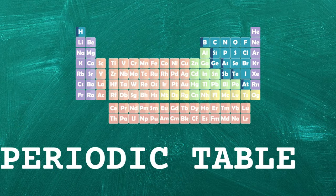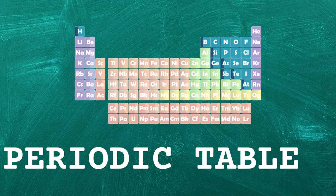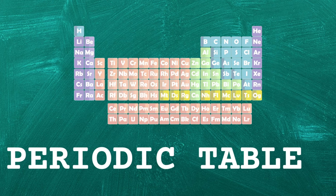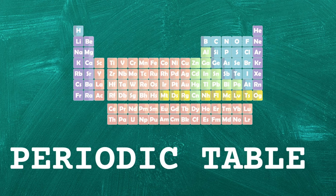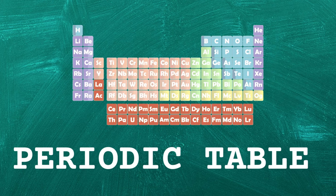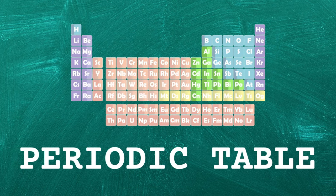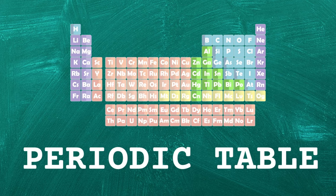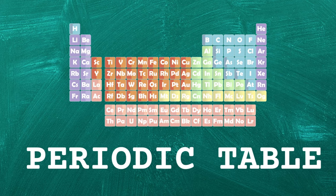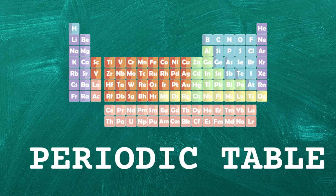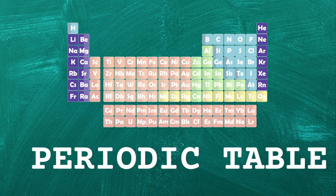Now let's explore the periodic table. This is a tabular arrangement of all known elements, organized by their atomic number and properties.